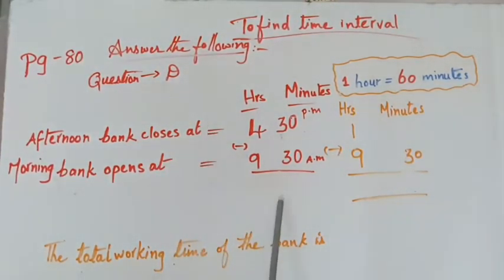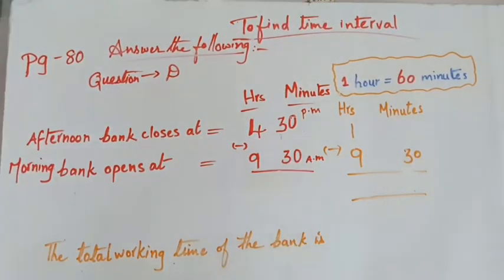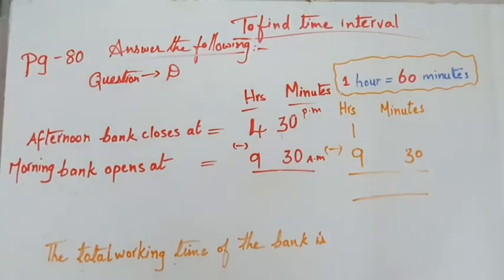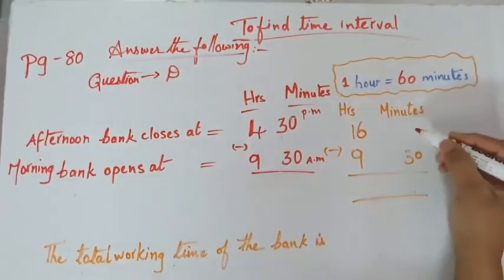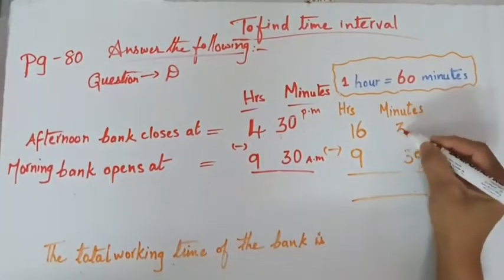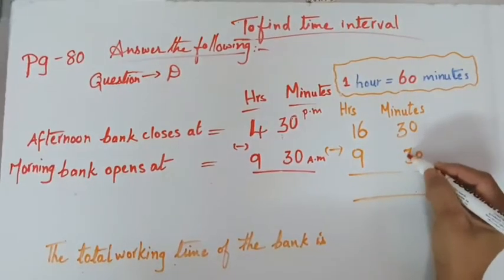So what we have to do? Because it is subtraction. When we have to subtract from a.m. to p.m., then we have to add 12 hours with p.m. So now we are going to add 12 hours with 4:30 p.m. So 4 plus 12, it is 16. So 16:30. Now we have to subtract.